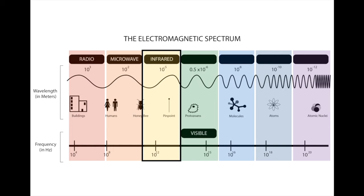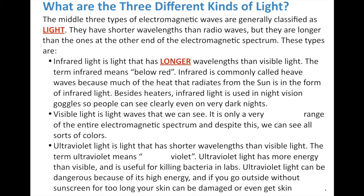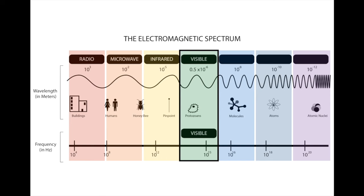Infrared wavelength is about the size of a pinpoint. Now let's talk about visible light — the light waves we can actually see. It's only a very narrow range, really really small, and despite this we can see all sorts of colors. In our next chapter we'll talk about colors, but just know that everything we can see is visible light — a tiny part of the electromagnetic spectrum.